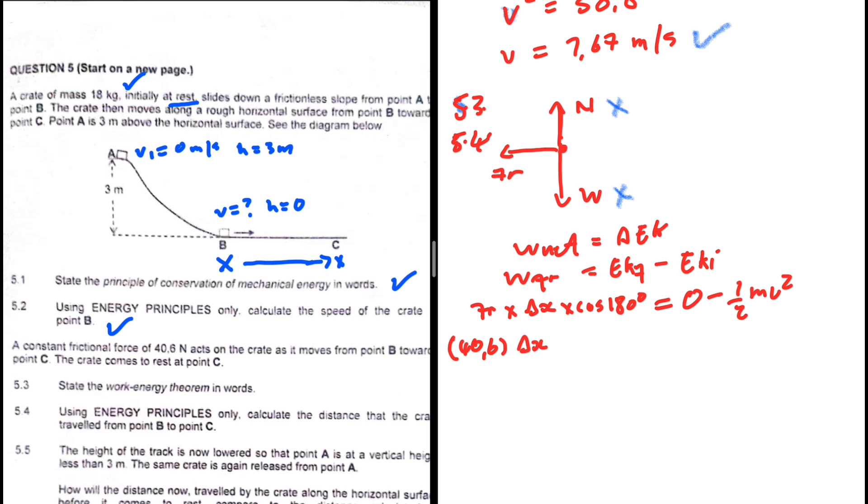So fr is 40.6, so we have 40.6 delta x is what we're interested in. Cosine of 180 is minus one, so we have minus one. This equals zero minus a half, the mass is 18 kg, and the velocity at point B is 7.67, so we have 7.67 and we square that. We're going to have minus 40.6 delta x, and that equals...